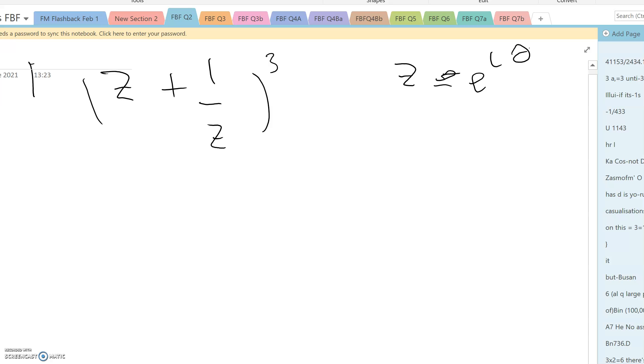The first point is to say that in that case, 1 over z is equal to e to the minus i theta, and z plus 1 over z is therefore going to be 2 cos theta, and z plus 1 over z cubed is going to be 8 cos cubed theta.